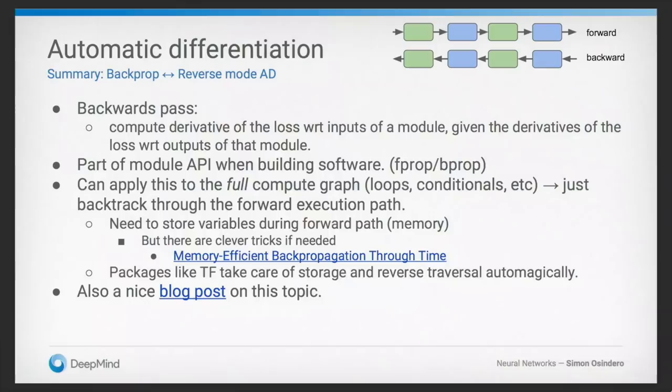Even though it's kind of trivial — it's basically the chain rule you've seen in high school — it's one of those simple ideas that had quite a big impact. In terms of efficiency when computing gradient updates for neural networks, organizing the computation in this efficient reverse-mode way makes a big difference. That's one of the reasons why when backprop was introduced it had such a big impact, even though at heart it's a fundamentally simple method. In the backwards pass through the network, what we're going to want to do is compute the derivative of the loss with respect to the inputs of each module.